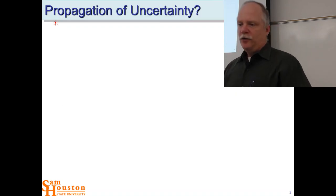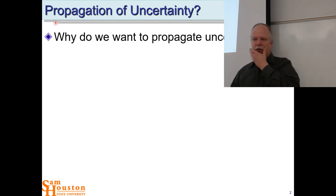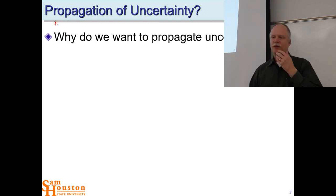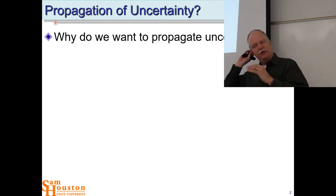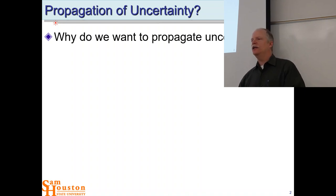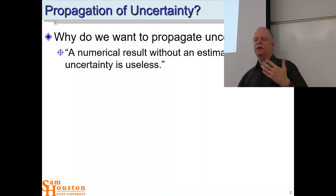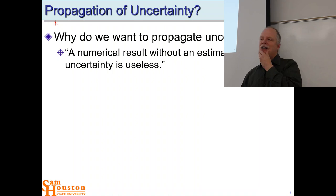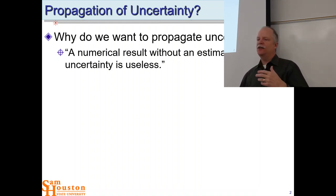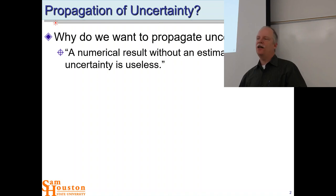For propagation of uncertainty, we want to make sure — and it will be evident today — why we want to propagate uncertainty. Every measurement has some uncertainty associated with it. Giving someone a number without an estimate of the uncertainty is giving them limited information. That's the third question for analytical chemistry.